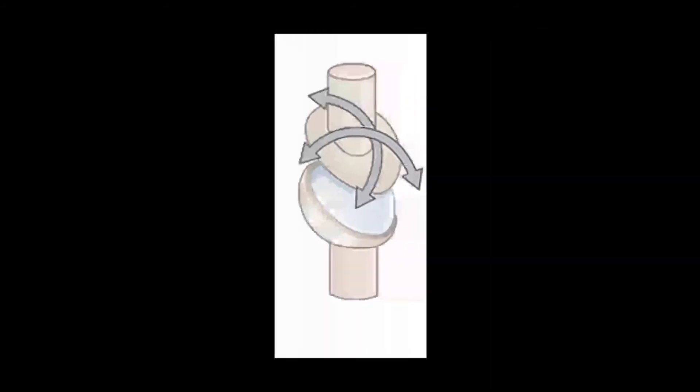That's what makes the ball and socket joint the most movable and flexible joint out of all the synovial joints. The ellipsoid or condylar joint is similar to the ball and socket joint, but it doesn't have the rotating ability that the ball and socket joint does have.